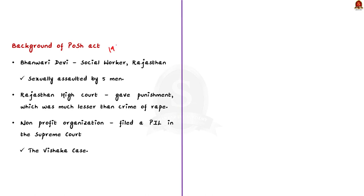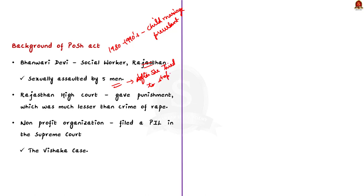Around the 1980s and 1990s, child marriage at a very young age was very much prevalent in Rajasthan. In 1992, Banwari Devi, a social worker in Rajasthan government's Women Development Project, was sexually assaulted by five men after she tried to stop the marriage of a one-year-old girl. The Rajasthan High Court convicted those five men with a punishment far lesser than the crime of rape. After that, a group of non-profit organizations filed a PIL in the Supreme Court seeking justice for Banwari Devi and appropriate punishment for the men involved in gang rape. This case is famously known as the Vishaka case.